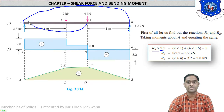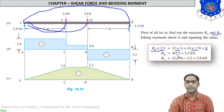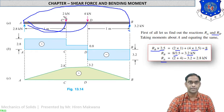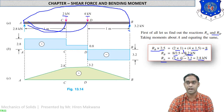The 4 kN force is clockwise with a distance of 1.5 meter, so 4 × 1.5. The 2 kN is also clockwise with a distance of 1 meter, so 2 × 1. The total is 8, and 8 divided by 2.5 gives RB = 3.2 kN. To calculate RA, use RA = total vertical load minus RB. Total load is 2 + 4 = 6 kN, so RA = 6 − 3.2 = 2.8 kN. So RB = 3.2 kN and RA = 2.8 kN.